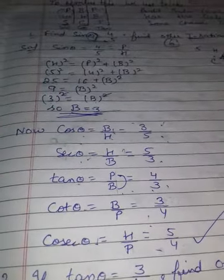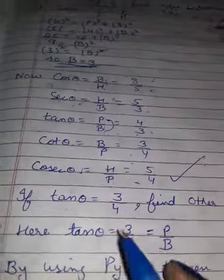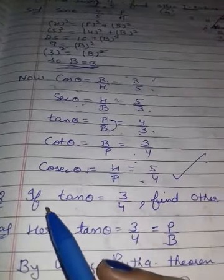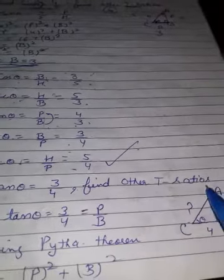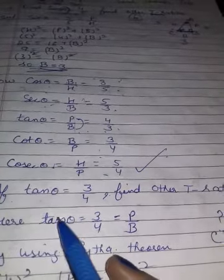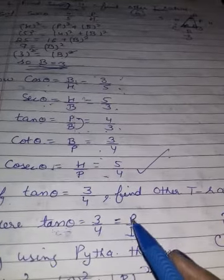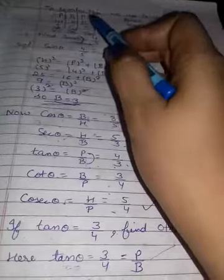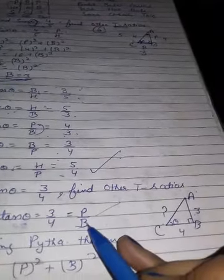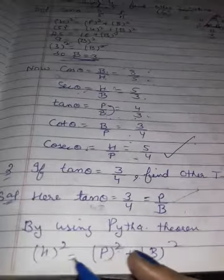Two sides you will always have and you have to find the third one using Pythagoras theorem. Now if tan theta is equal to 3 by 4, find other T ratios. Same type of question but I changed it — now I have taken tan theta. You know tan theta is equal to perpendicular upon base.